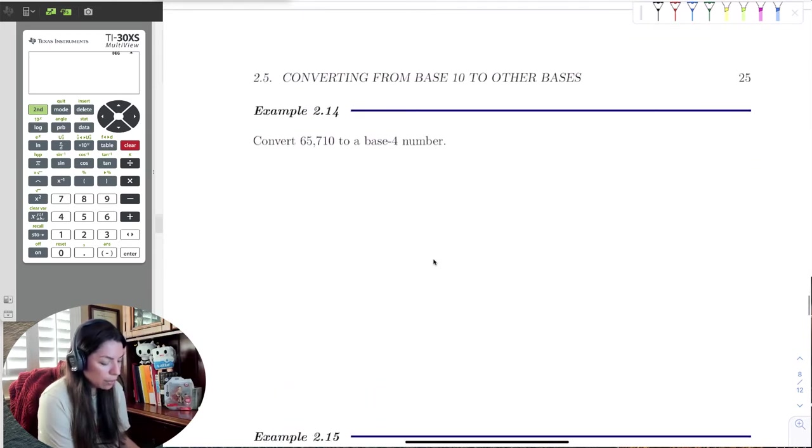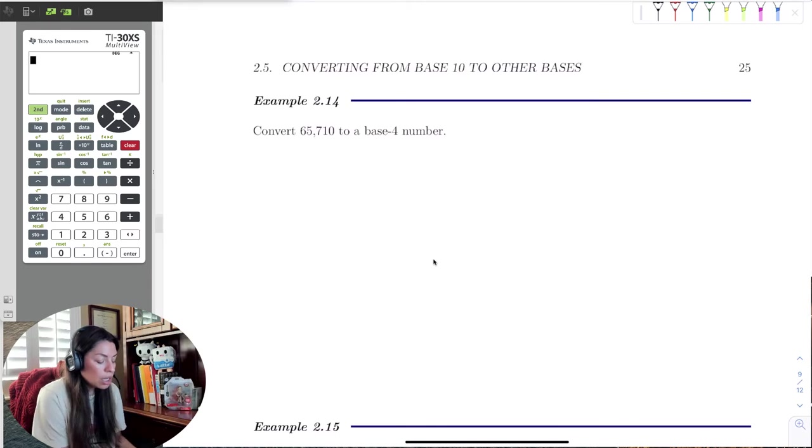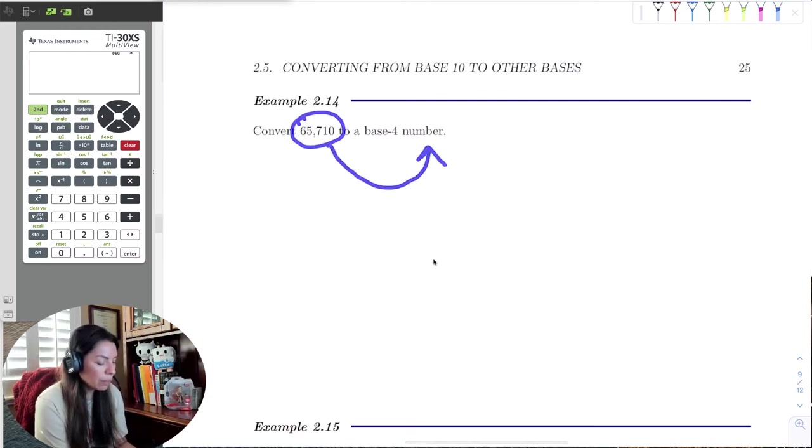So now let's try the process once again. Let's convert 65,710, that's a base 10 number, and write it into a base 4 number. The reason why I know this is a base 10 number is because there's no subscript. Recall that if there is no implication of what base we're counting in and there's no subscript to the bottom right, then we assume that this number is base 10.